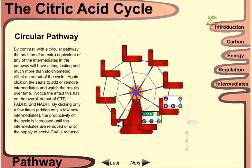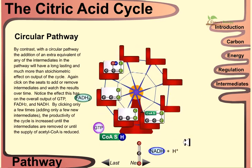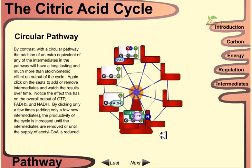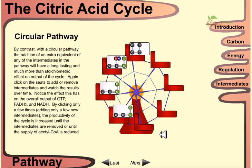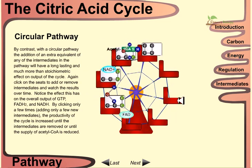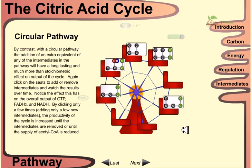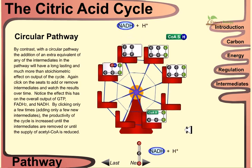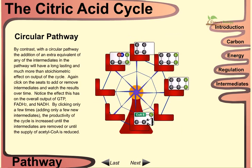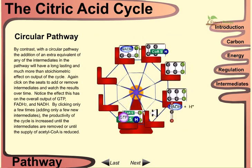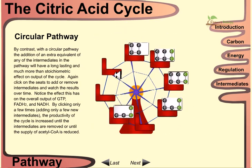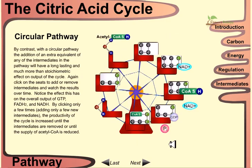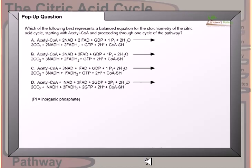If we increase the intermediates in the cycle, the production of GTP, FADH2, and NADH is increased by a large amount. Further increasing intermediates increases output even more — it works at great concentration and produces results very effectively.